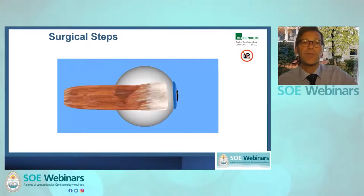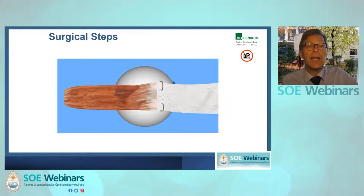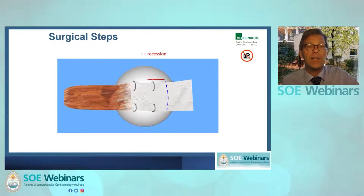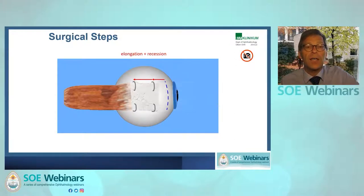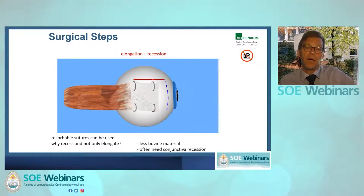What are my surgical steps? Here I have a muscle which I want to recess and elongate the tendon. I take a strip of Tutopatch the same width as the muscle, attach it with resorbable sutures, detach the muscle and let it slip back. Then I reattach the Tutopatch to the sclera with a recession and muscle elongation, which gives the total effect of the surgery. Afterwards I cut away the anterior part of the Tutopatch. Resorbable sutures can be used because the Tutopatch will be resorbed and replaced by the patient's own tissue.